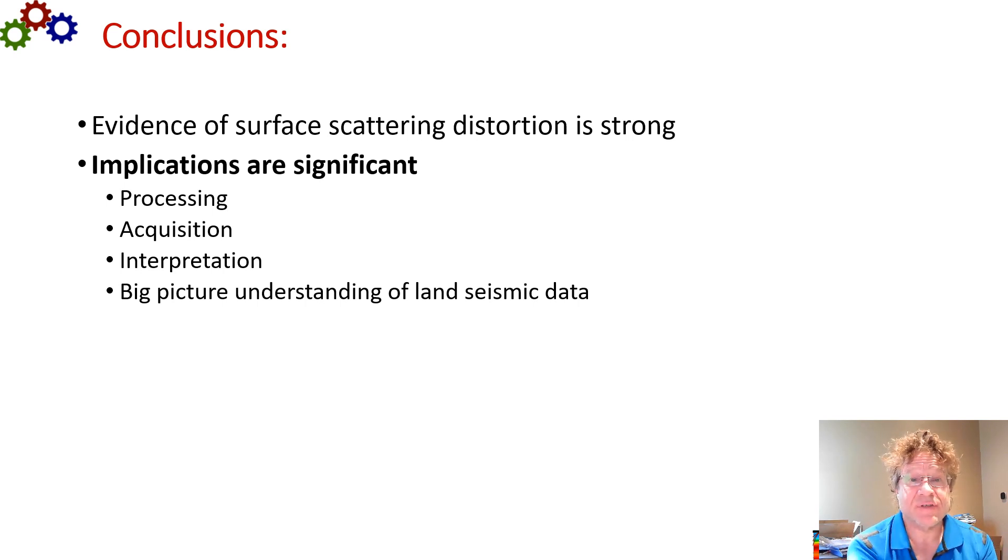In conclusion, the evidence of surface scattering distortion is strong. You see it in real data if you know how to look. Synthetic studies and VSP data support this. And the implications are significant. It affects processing in that you can recover more signal by undoing the distortion. And it affects acquisition in that super dense acquisition helps, but it won't solve all your problems. Dense acquisition can just record more distorted data. And it affects interpretation in that it explains how your source and receiver wavelet may not be reliable.